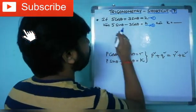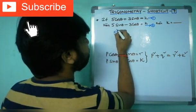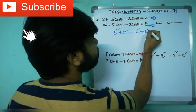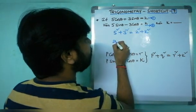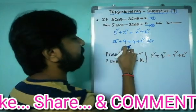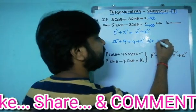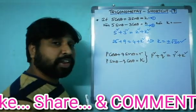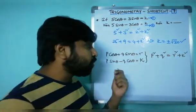Applying the shortcut: here p = 5, q = 3, r = 2. So 5² + 3² = 2² + k², which gives 25 + 9 = 4 + k², so 34 − 4 = 30, and k = ±√30. It takes hardly three seconds using this shortcut formula!